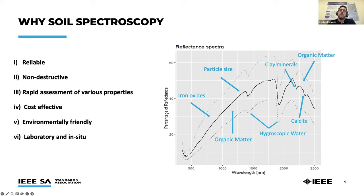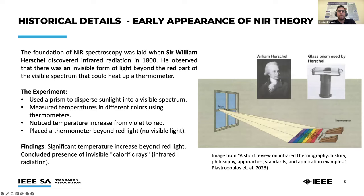Different chemicals and properties of soil interact with different parts of the electromagnetic spectrum. That's why it is very important to carefully select the sensors we are going to use to develop our applications. A few historical details about spectroscopy and NIR theory follow.